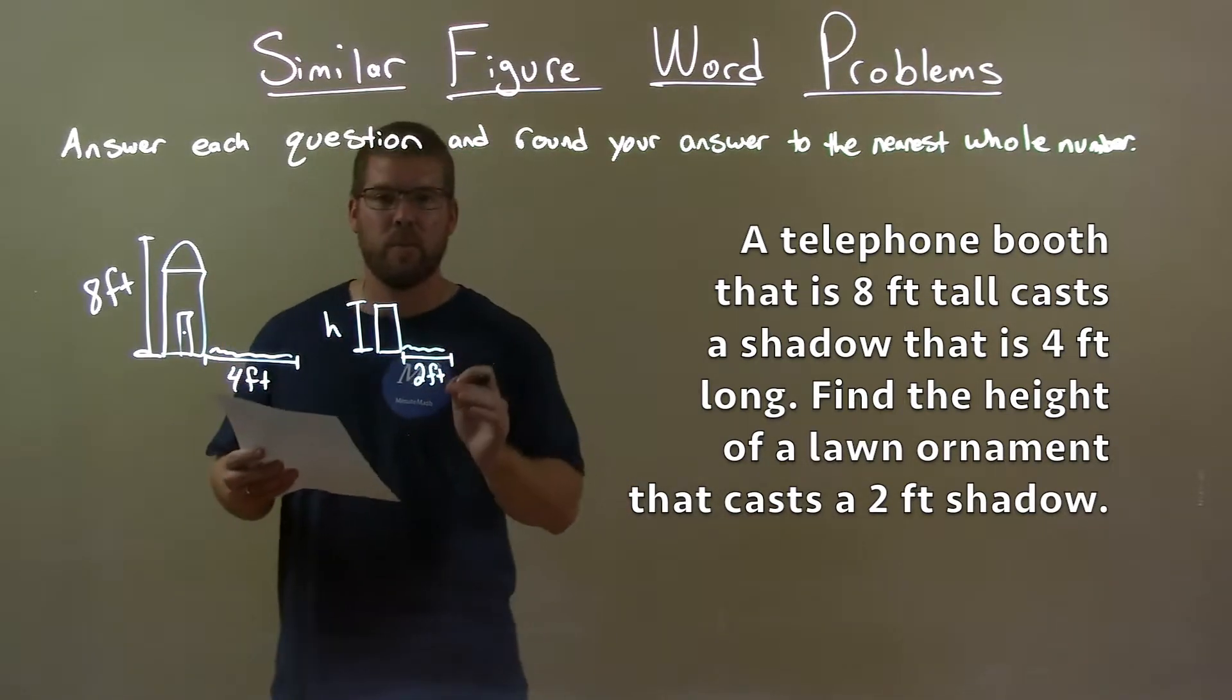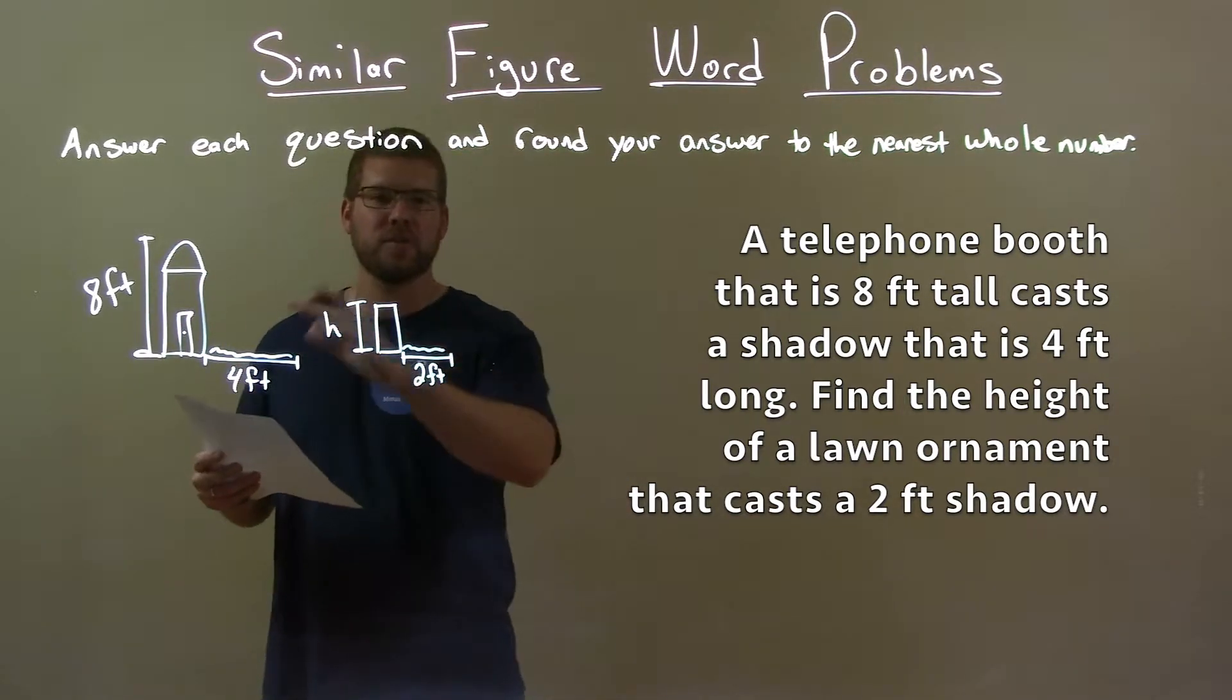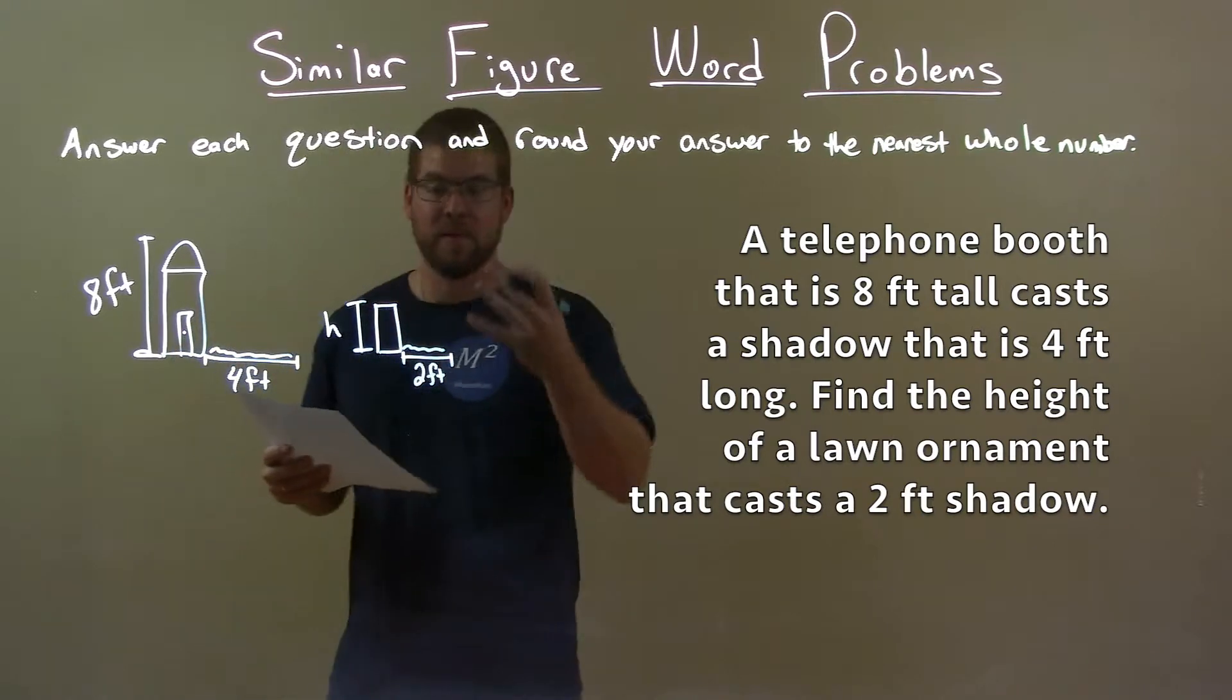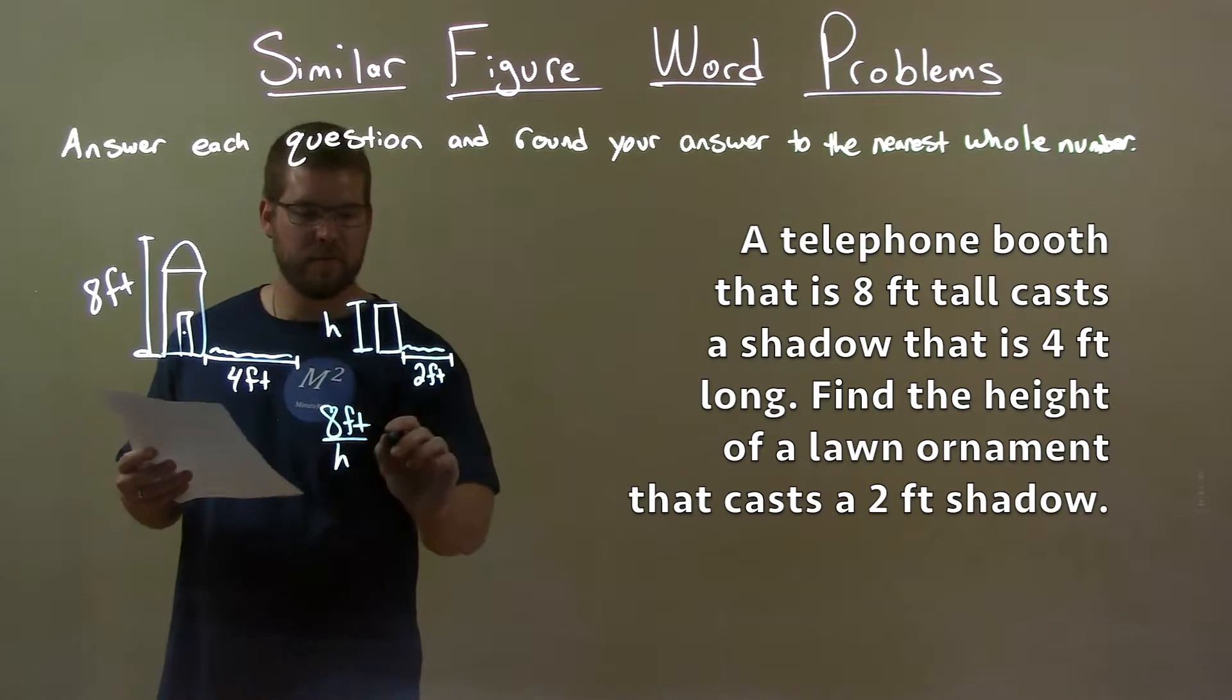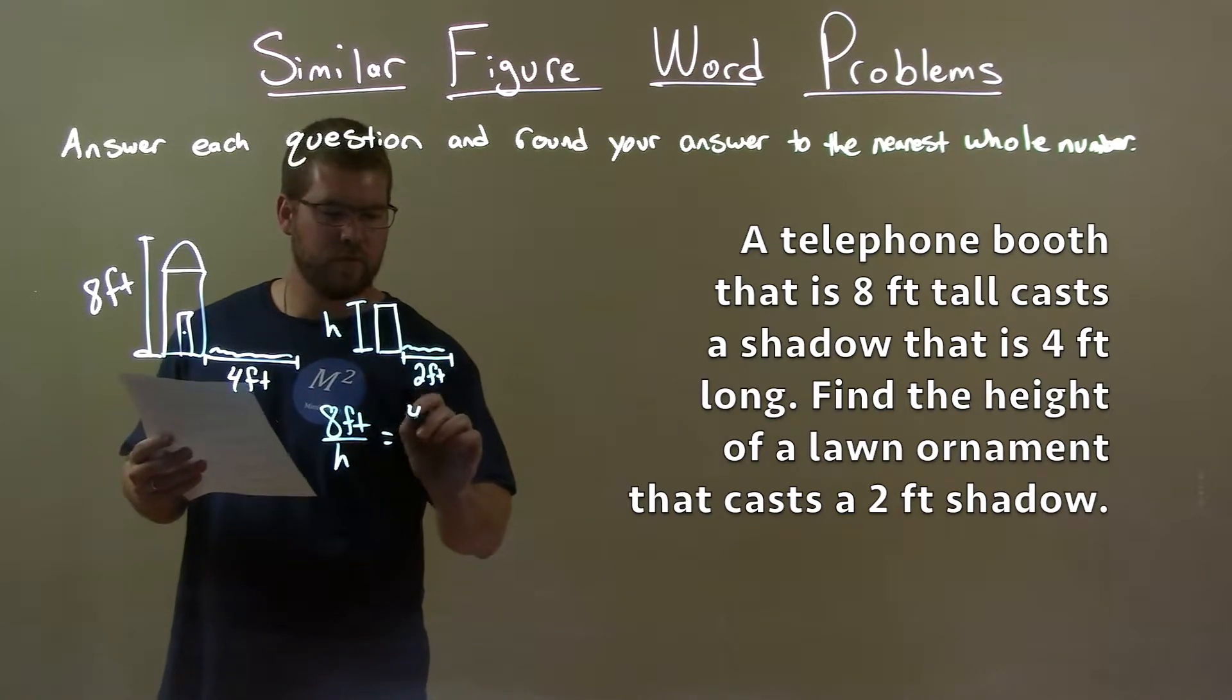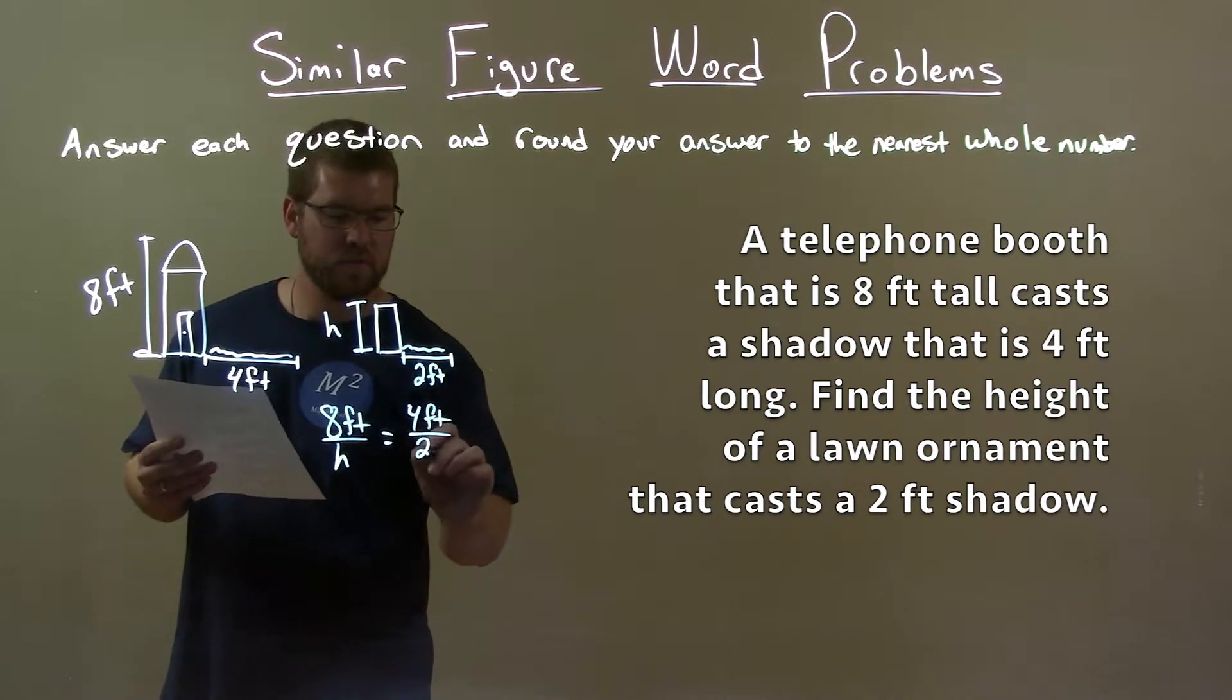So let's set up a proportion. The proportions of the height and shadows should be the same proportion. So 8 feet over h, both the heights, equals the height of the first one, 4 foot over 2 feet.